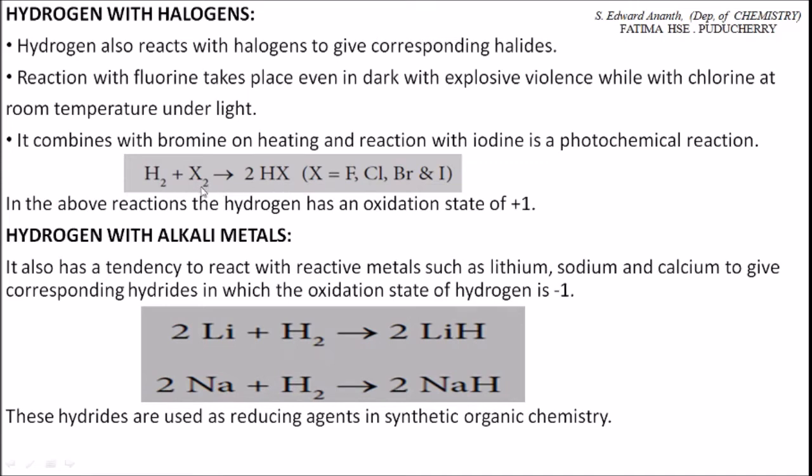Bromine and hydrogen react only on heating. So hydrogen combines with bromine on heating to form hydrogen bromide HBr. With iodine, it is a photochemical reaction upon irradiation of light. It combines with iodine to form hydrogen iodide.